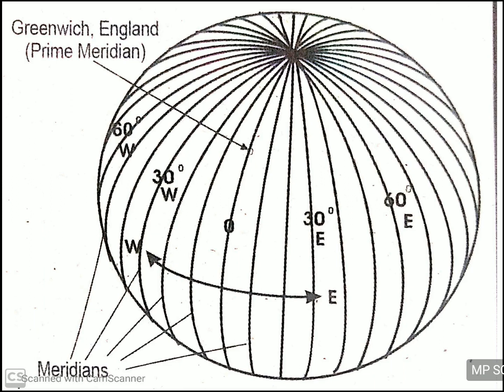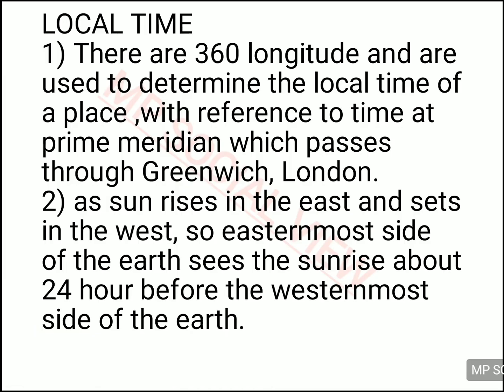When the Greenwich Meridian is drawn, it divides the earth into eastern and western hemispheres. Then a total of 360 longitudes are drawn on the earth — 180 on the left side of zero degree and 180 on the right side — because the total degrees of any circle is 360. So the total number of longitudes is 360, and the zero degree longitude is called the Greenwich Meridian because it passes through Greenwich, a place in London, England.